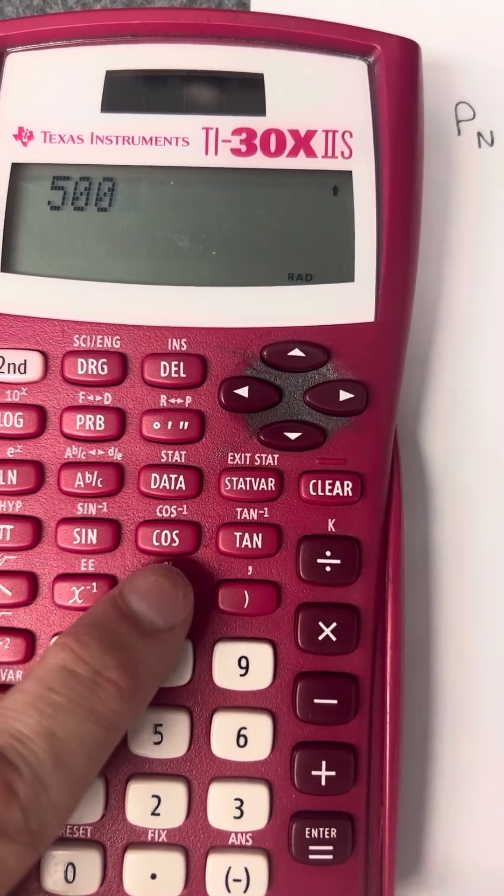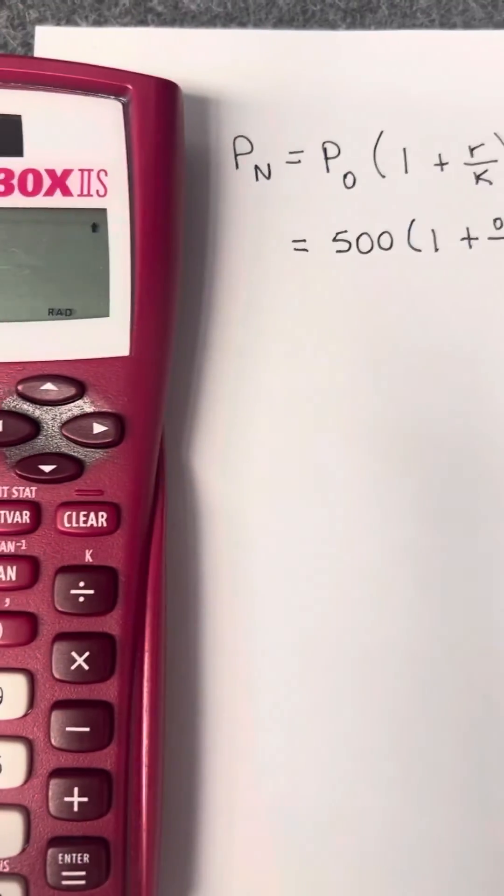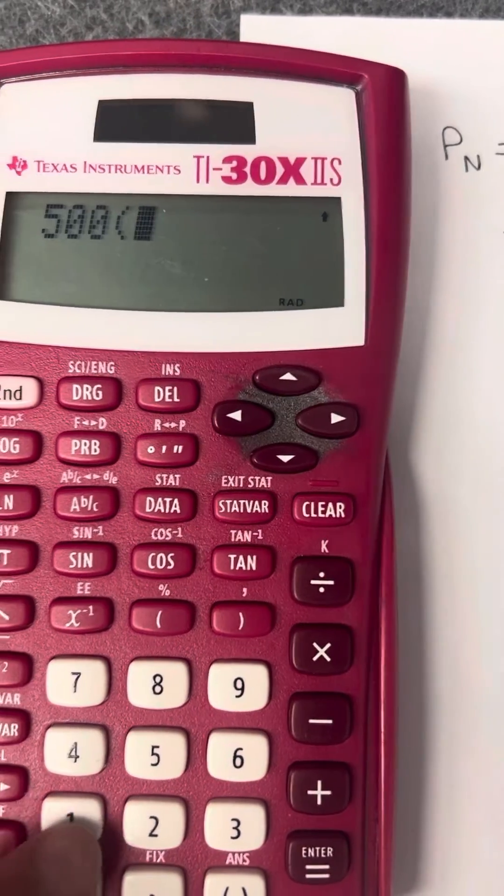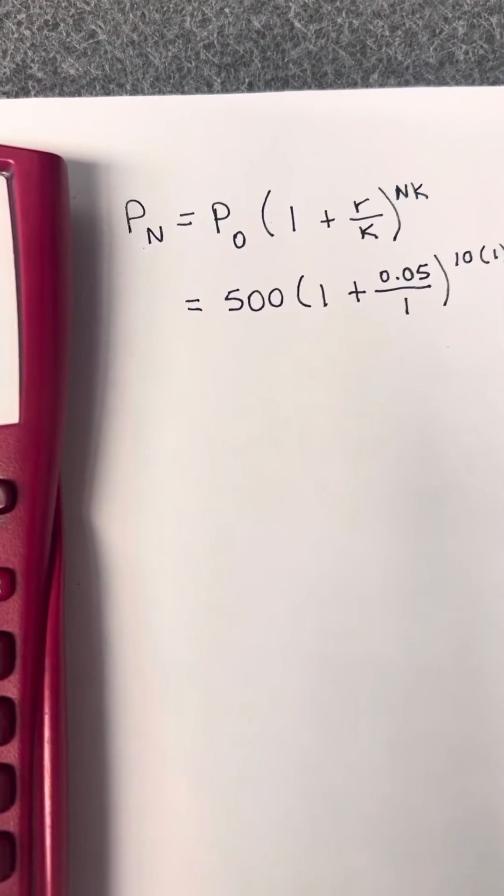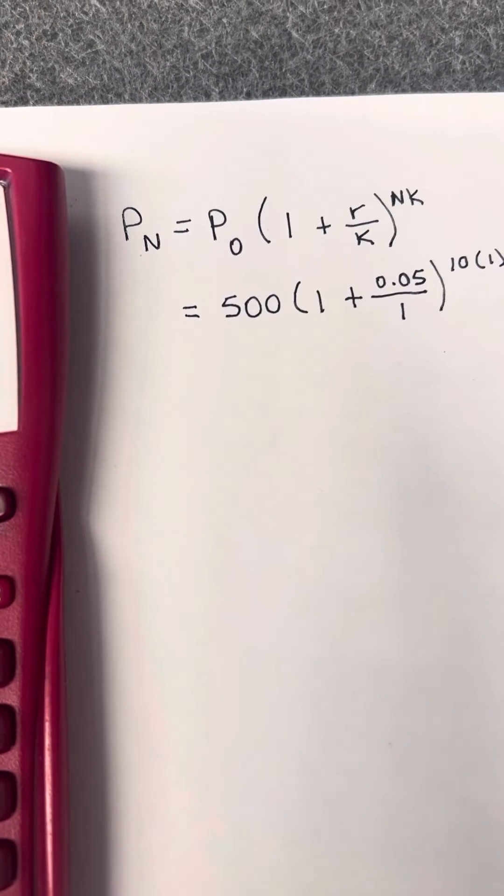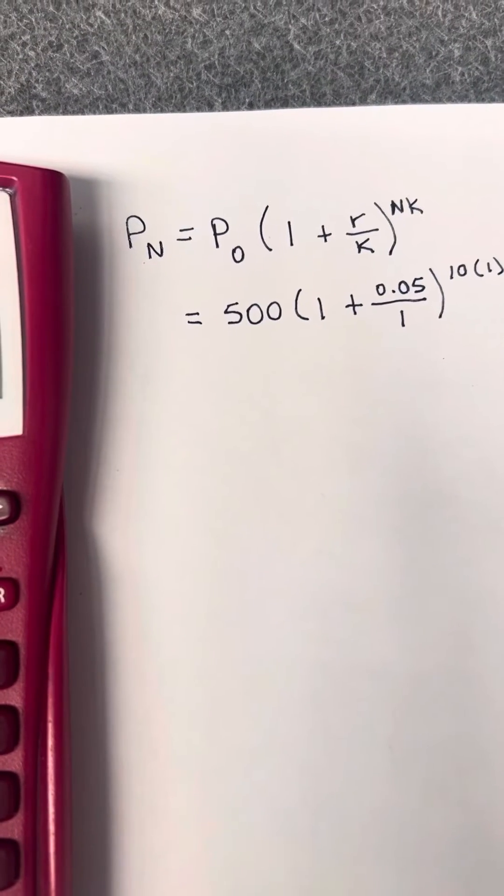I'm going to open a parenthesis and then put in 1 plus, and then for my fraction, it's 0.05 or 5 hundredths divided by 1.